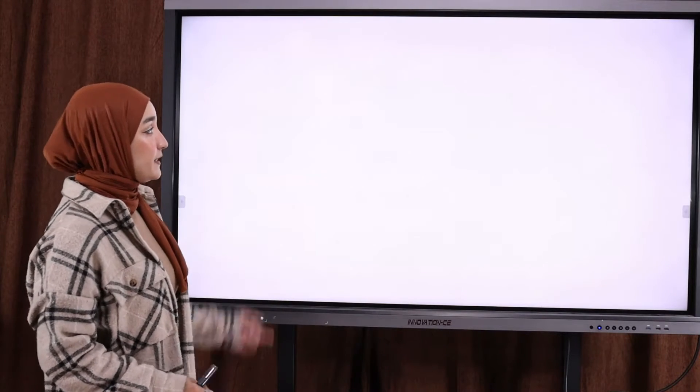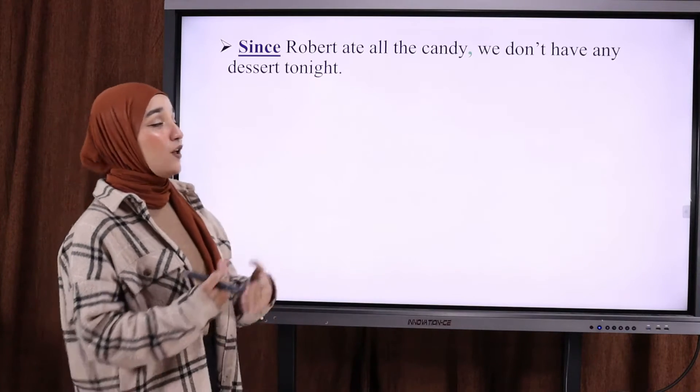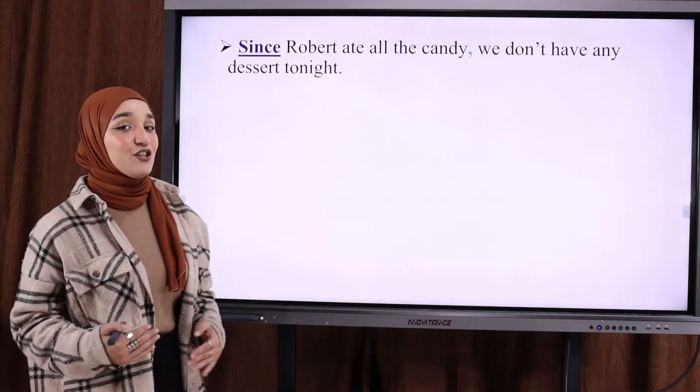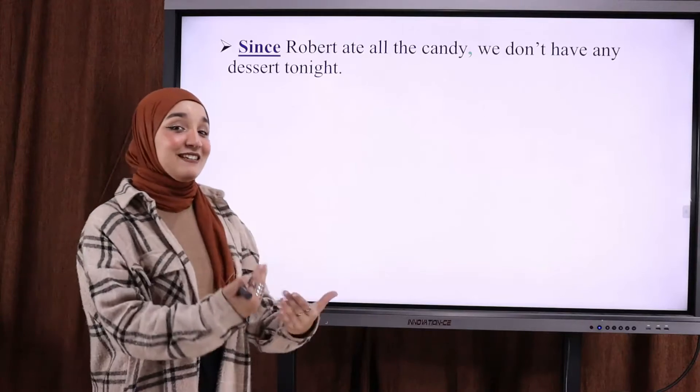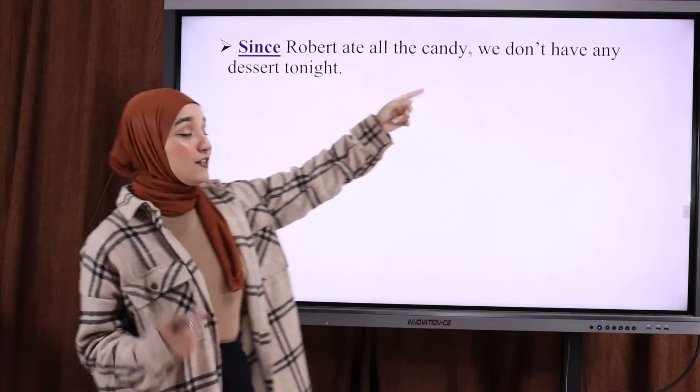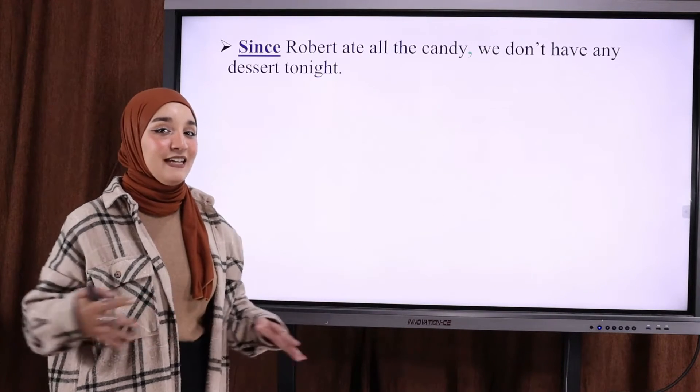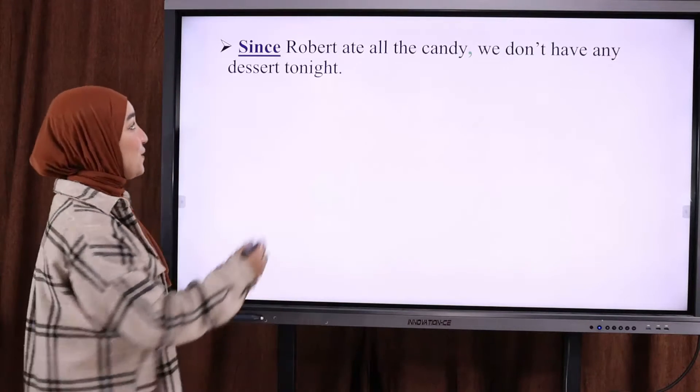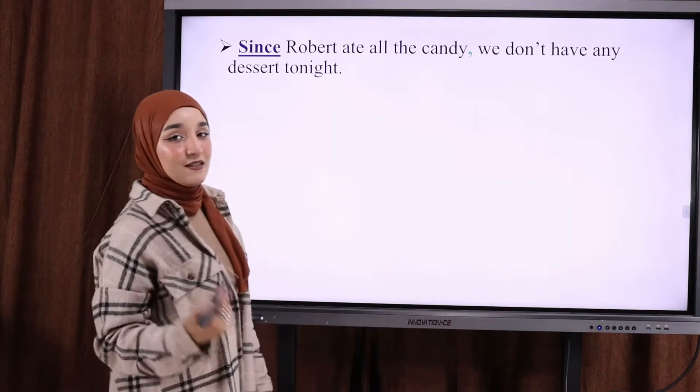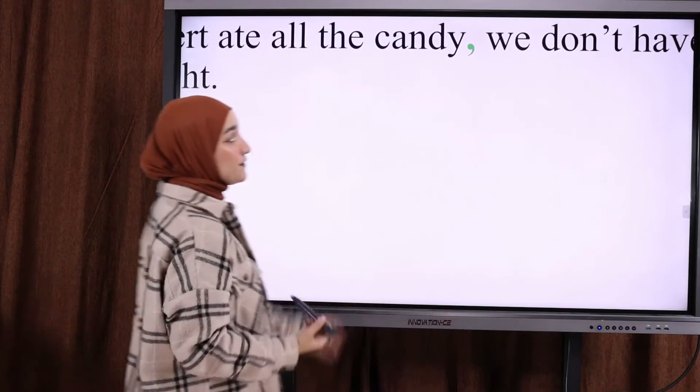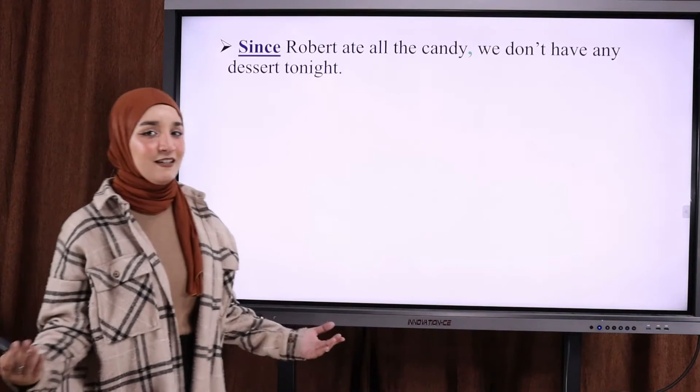Let's take a look at another slide. Here we have different examples. Since Robert ate all the candy, we don't have any dessert tonight. So, Robert, he ate all the candy. This is the cause. The result, the effect. We don't have any dessert tonight. This is the effect. We started with the connector, since. Robert ate all the candy is the cause. And I have to put comma here.